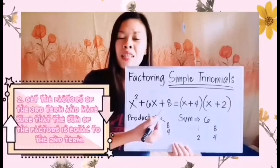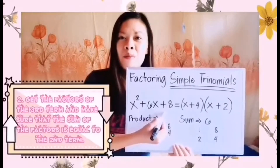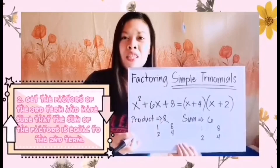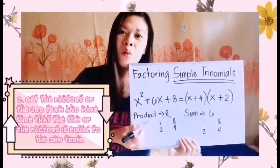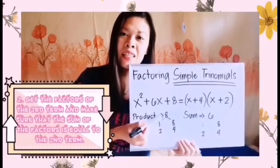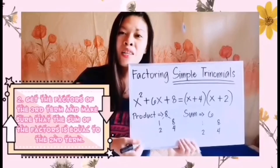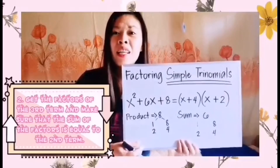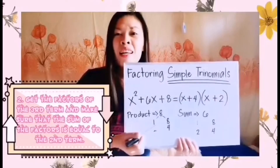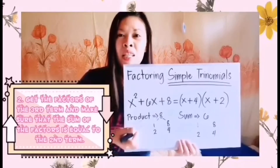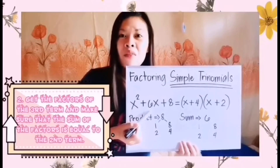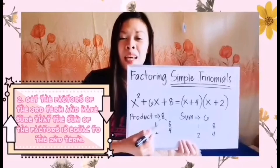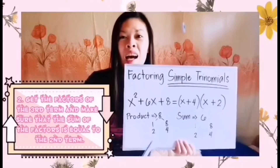Second step: we consider the third term, positive 8. We need to get the factors of positive 8. The factors of 8 are 1 and 8 (since 1 times 8 equals 8), and another pair is 2 and 4 (since 2 times 4 equals 8).